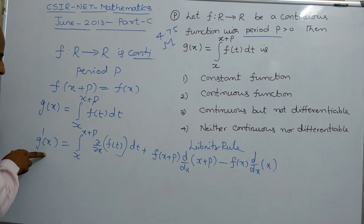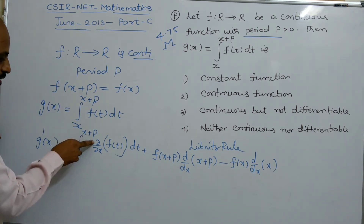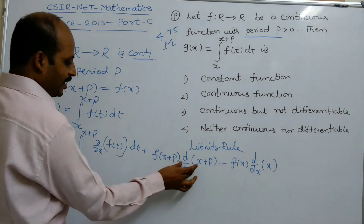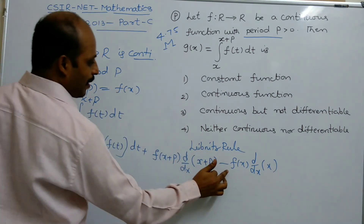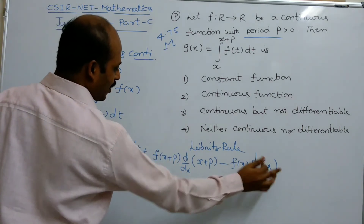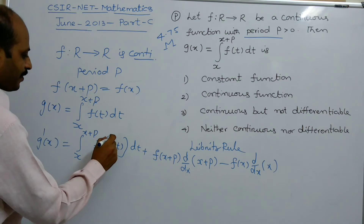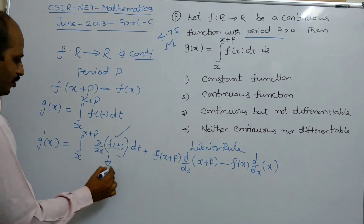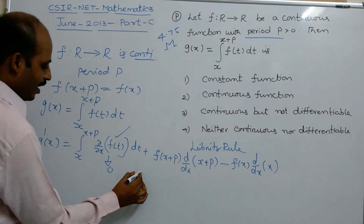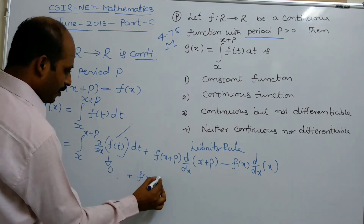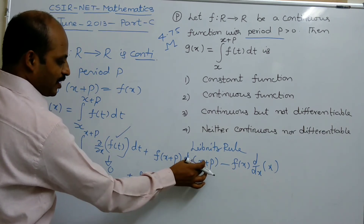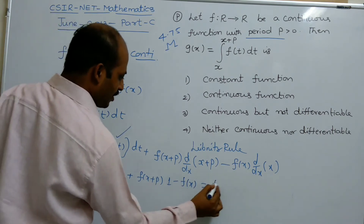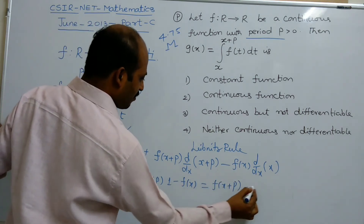So g'(x) equals the integral term (which is 0) plus f(x+p) times d/dx of (x+p), which equals 1, minus f(x) times d/dx of x, which equals 1. This simplifies to f(x+p) minus f(x).